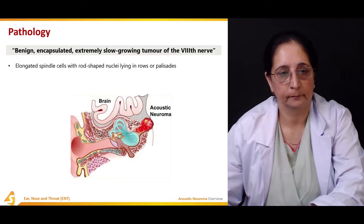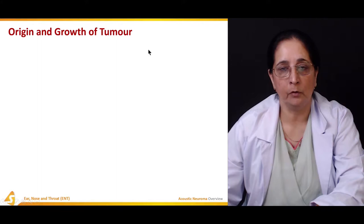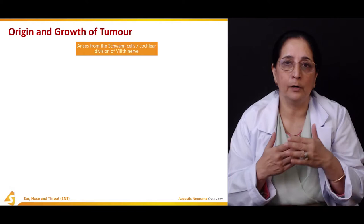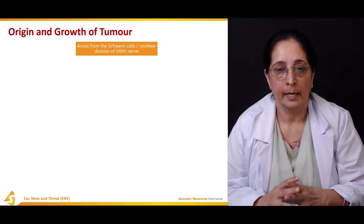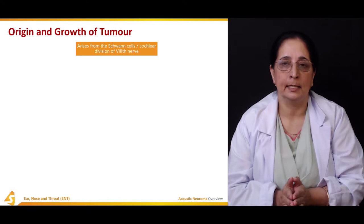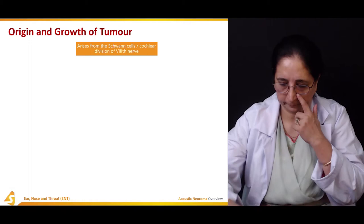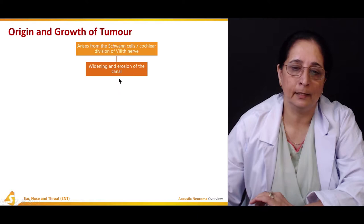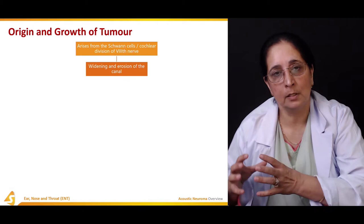Acoustic neuromas arise from Schwann cells — the cells that form the covering of the nerves — which is why they are also known as schwannomas. They arise specifically from the cochlear division of the eighth cranial nerve, the vestibulocochlear nerve. Once formed, the tumor causes widening and erosion of the auditory canal.